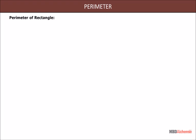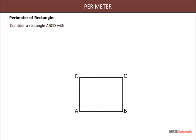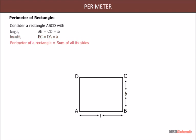Perimeter of Rectangle: Consider a rectangle ABCD with length AB equal to CD equal to L, and breadth BC equal to DA equal to B. Perimeter of a rectangle is equal to the sum of all its sides. So, perimeter P is equal to L plus B plus L plus B, which equals 2 into (L plus B).